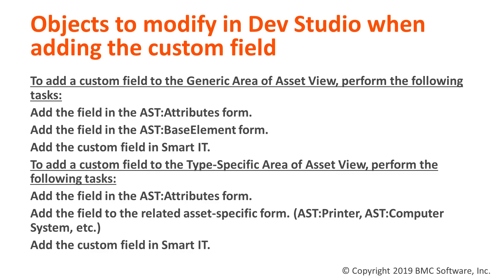Here's the list of objects you need to modify within Developer Studio when adding a custom field. To add a custom field to the generic Asset View within SmartIT, you only need to add it to the AST Attributes form and the AST Base Elements form, which is the default view. To add it to a type-specific area of the Asset View, you would add it to the AST Attributes form and the related asset-specific form, such as AST Printer or AST Computer System.